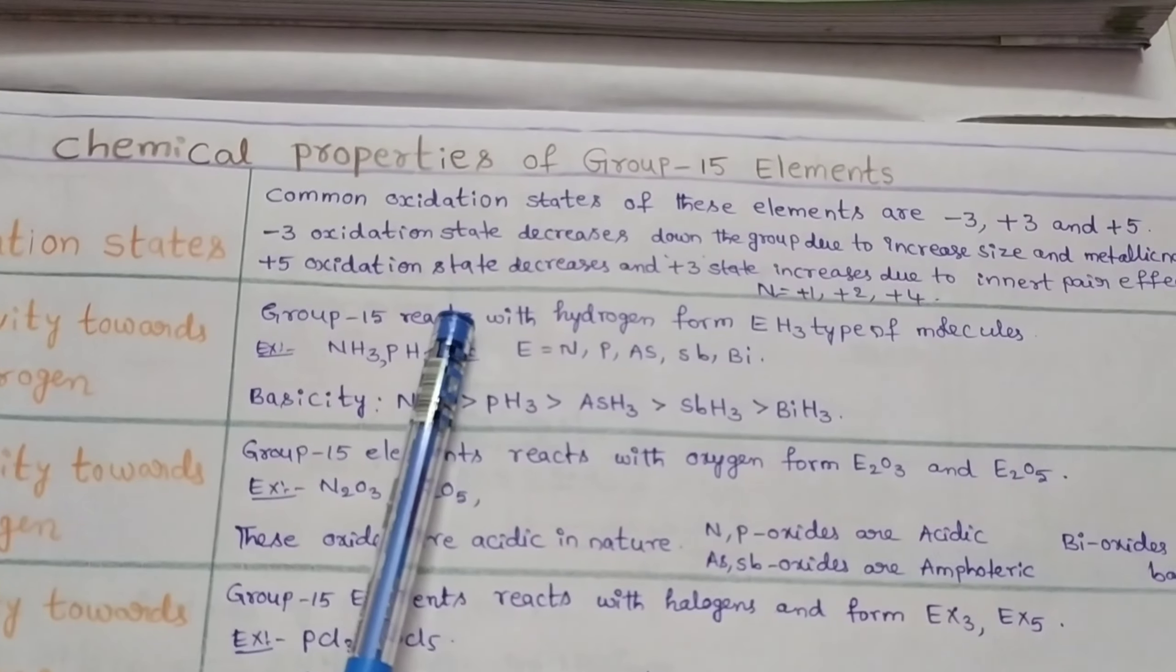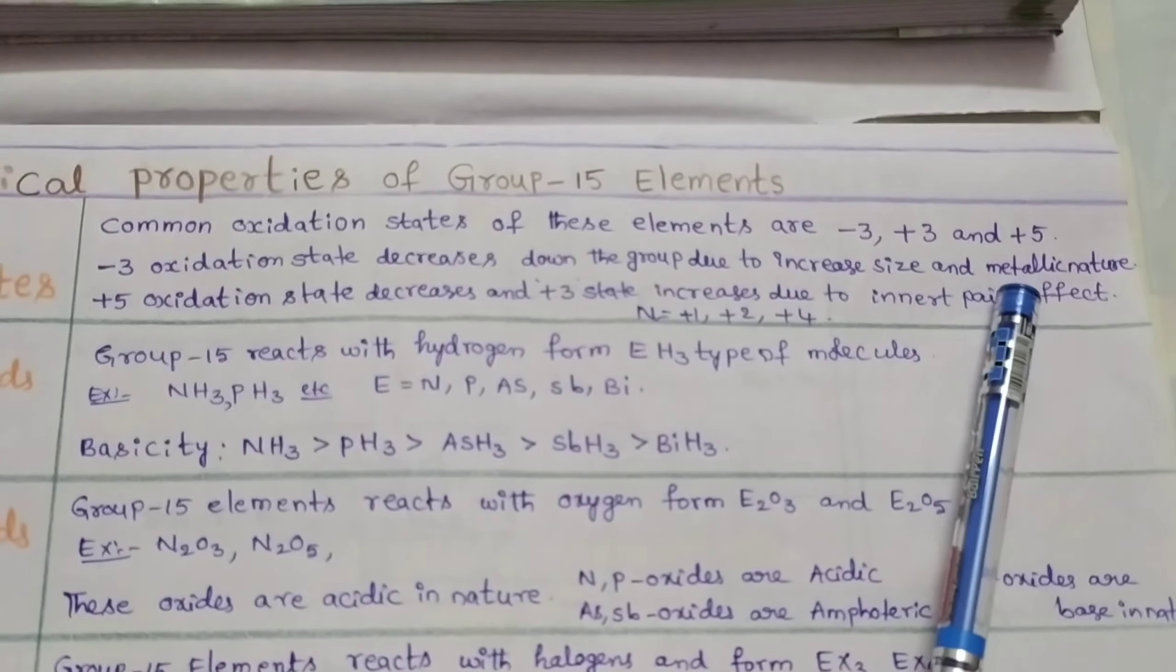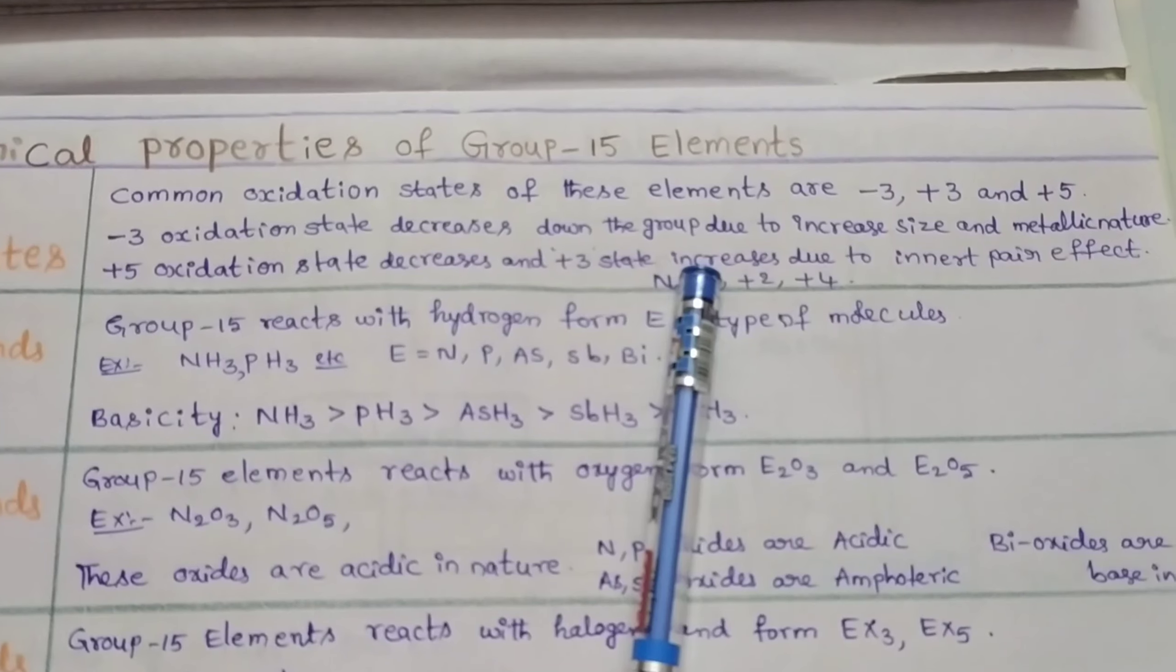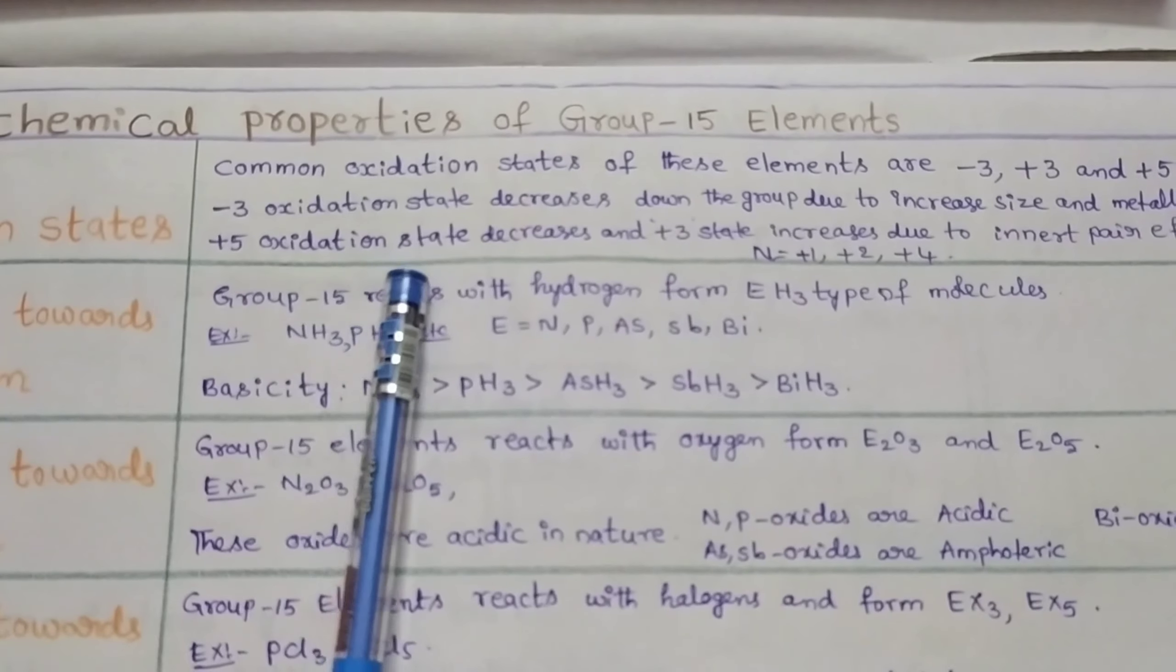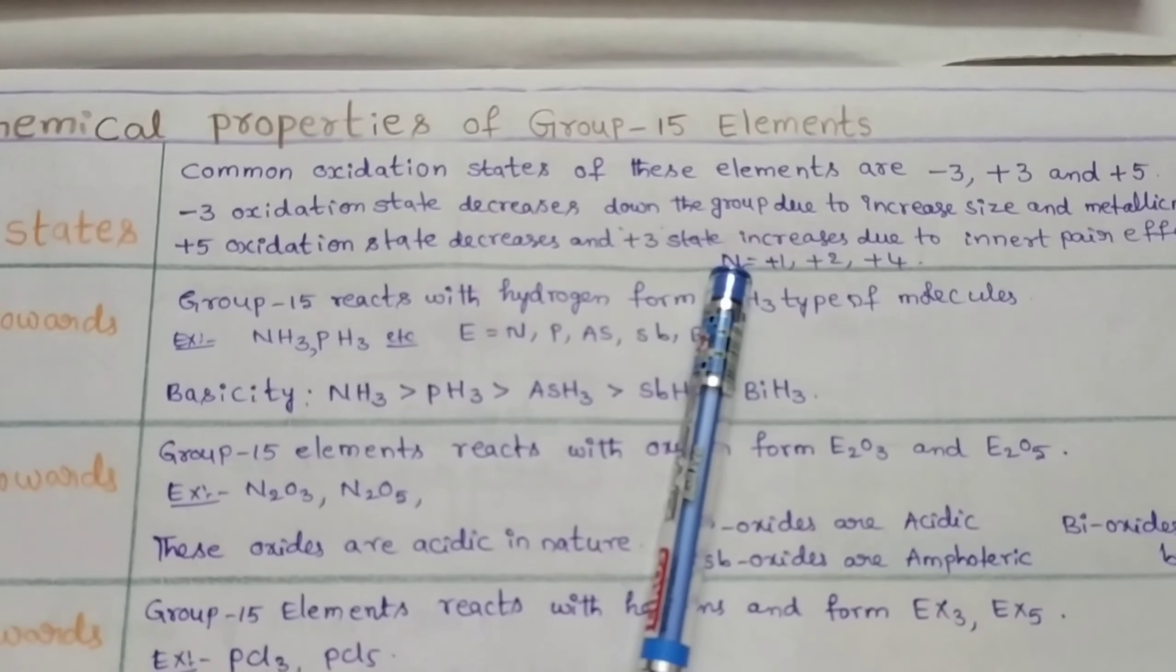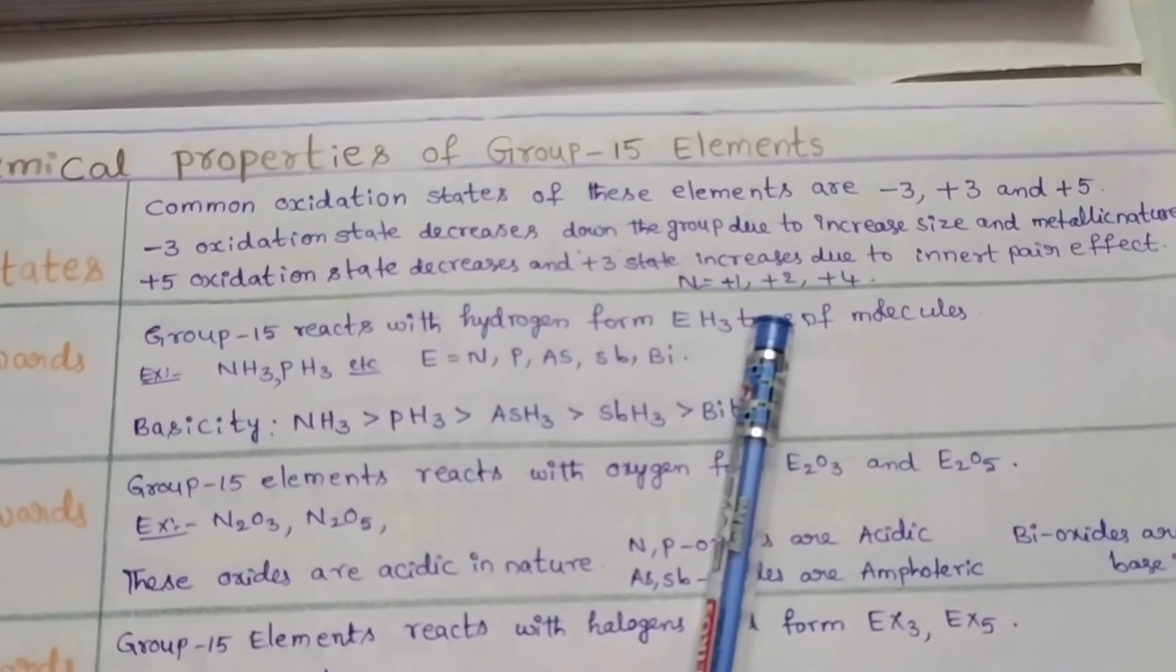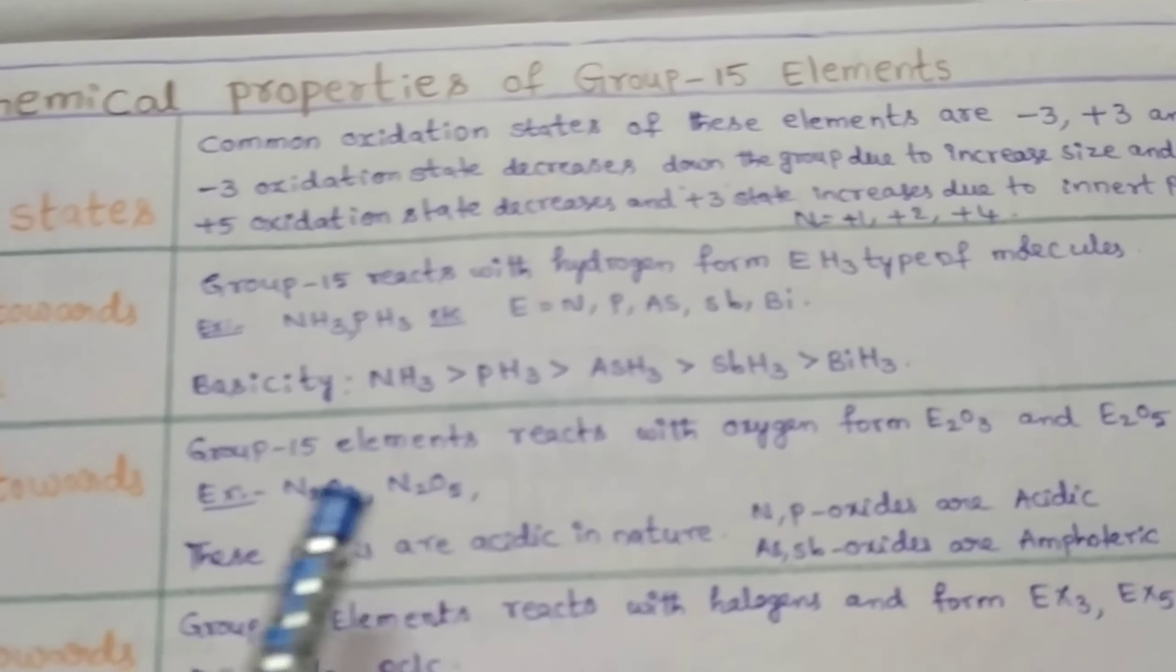The common oxidation states of group 15 elements are -3, +3, and +5. Here, -3 oxidation state decreases down the group because of increasing atomic size and metallic character. The +5 oxidation state also decreases down the group, and +3 oxidation state increases due to inert pair effect. In addition to -3, +3, and +5, nitrogen can also exist in +1, +2, and +4 oxidation states.